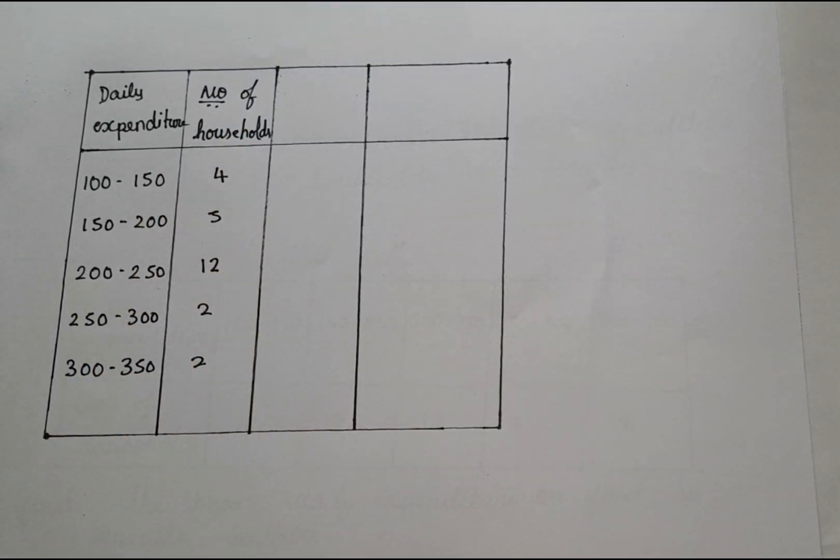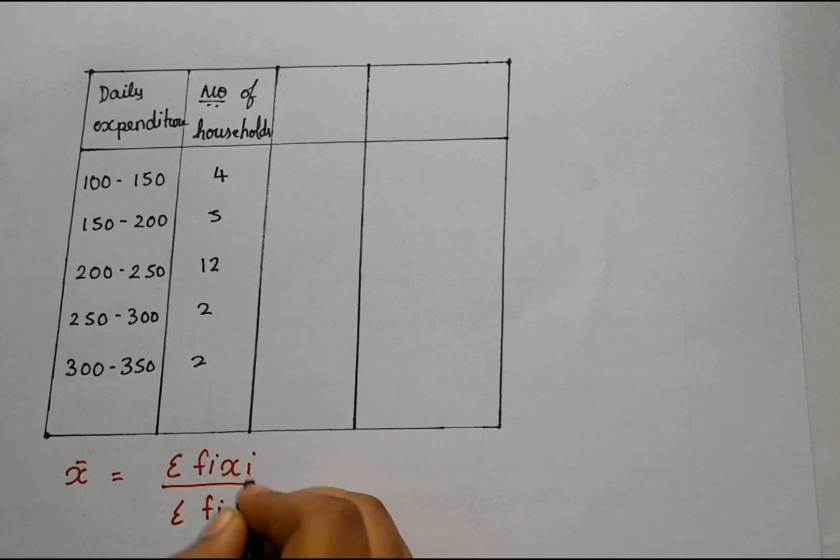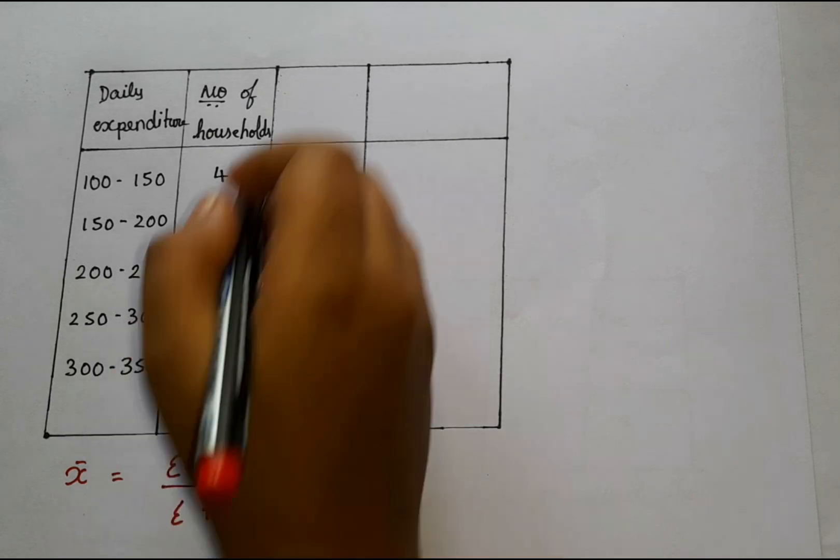Since I am going to use direct method, what is the formula? The formula is X bar is equal to sigma Fi Xi divided by sigma Fi. So here we are supposed to find the Xi value as well as the Fi value. They already mentioned the Fi value, so we are supposed to find the Xi value at first.